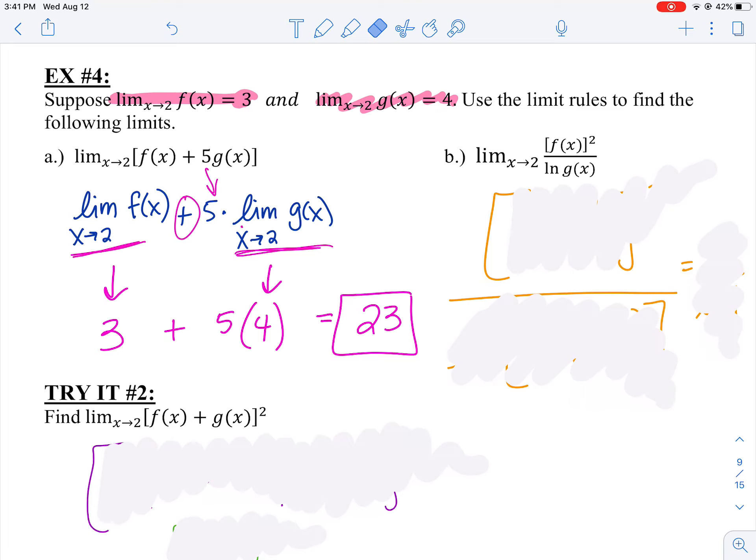Let's do another one. Look at B. B says the limit as X approaches two of F(X) squared over the natural log of G(X). A whole bunch of stuff going on. Let's do it in pieces instead. I should be able to break up the numerator into the limit as X approaches two of F(X), get an answer and then square it.